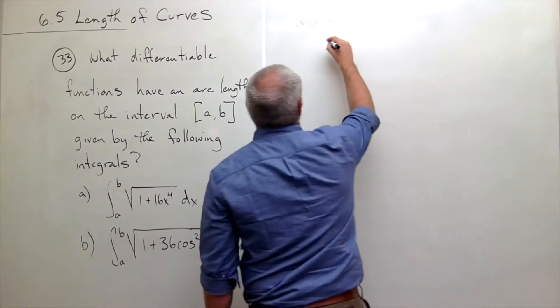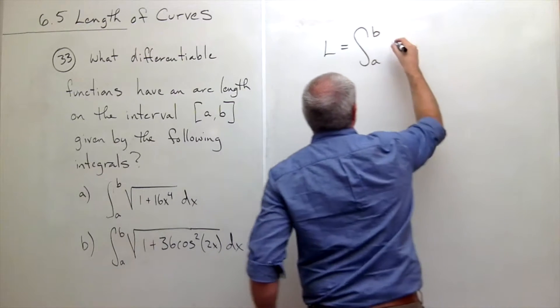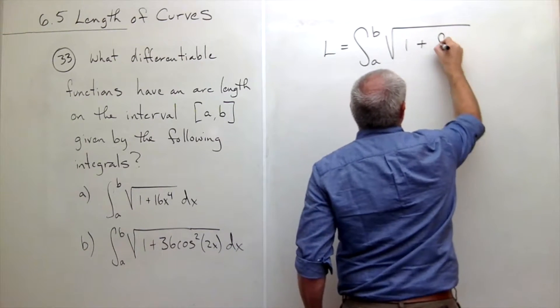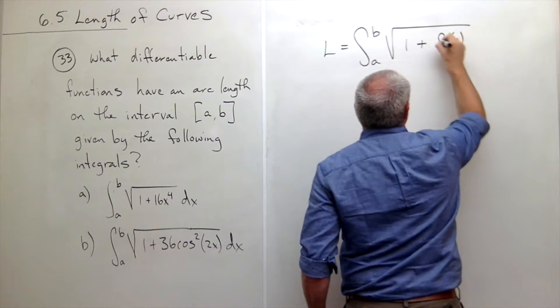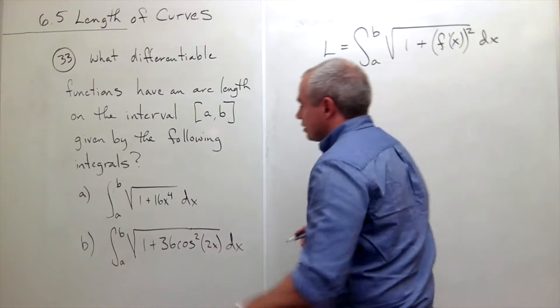Remember, the formula for arc length L is integral from a to b of the square root of 1 plus the derivative of the function squared dx.